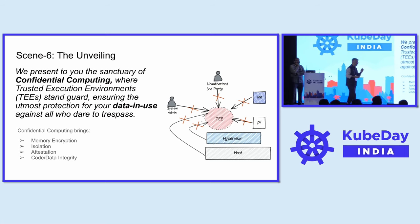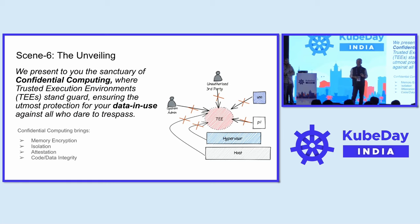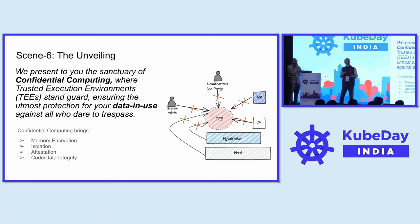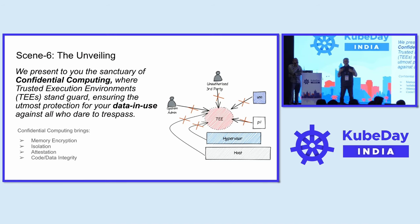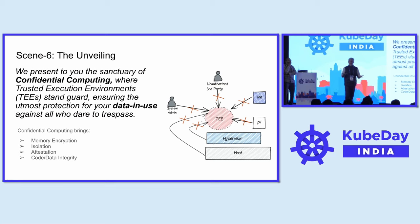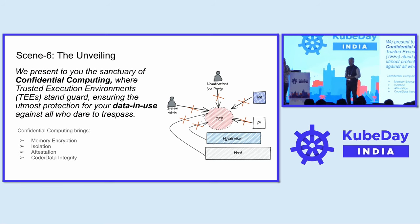So instead of implicitly trusting adversaries or admins, we remove the trust altogether. We say we don't trust you. If I am running my application in a Kubernetes cluster in public cloud, I don't have to trust the provider of the Kubernetes environment. That's what confidential computing gives you.